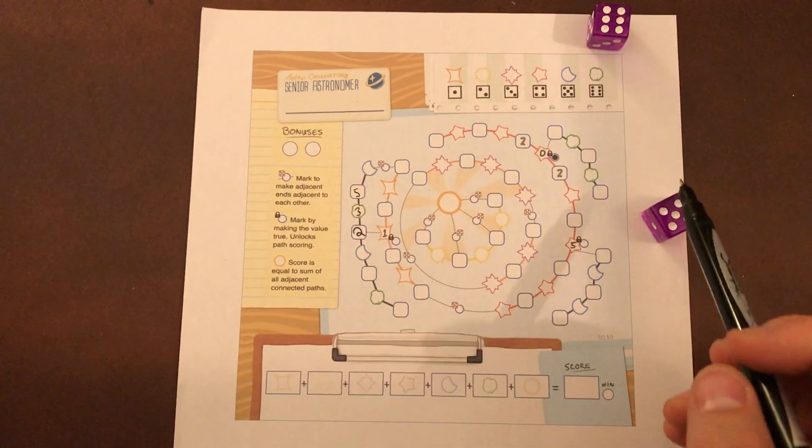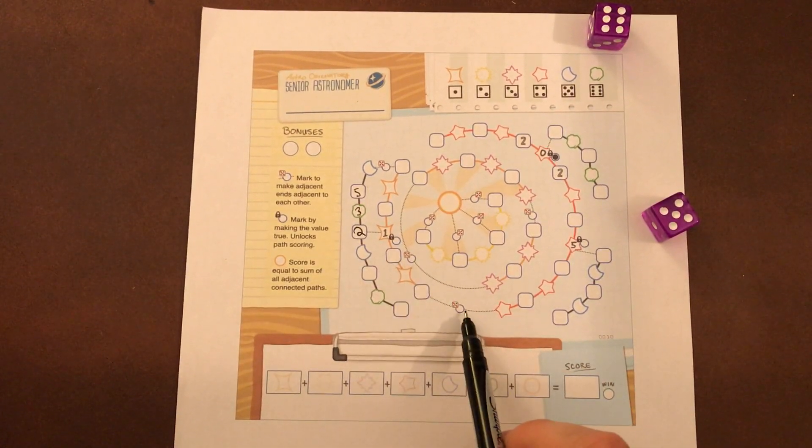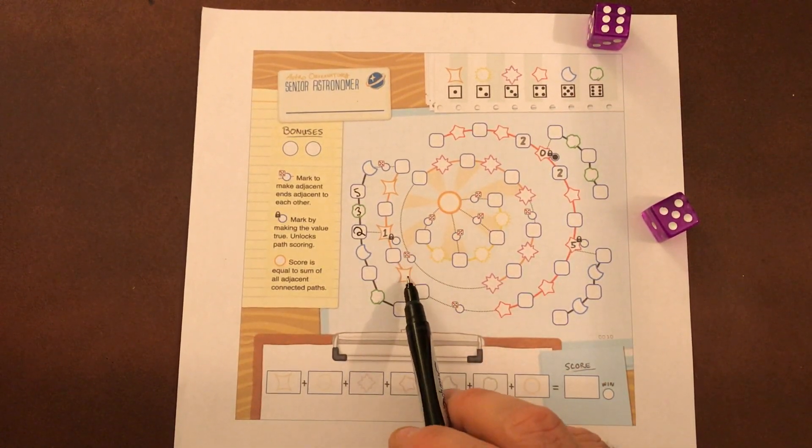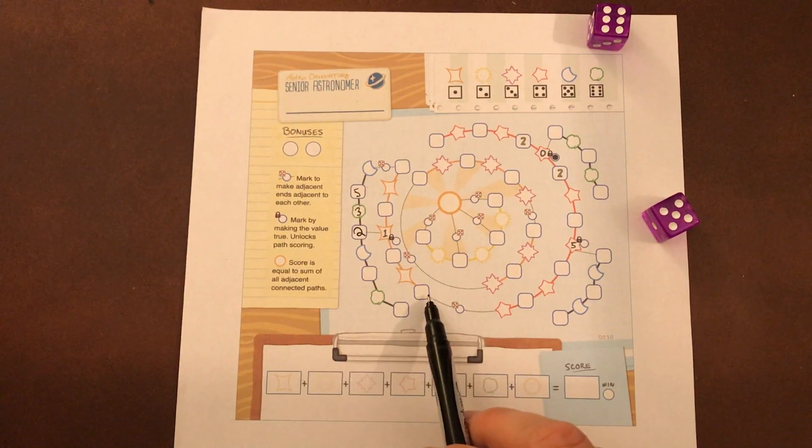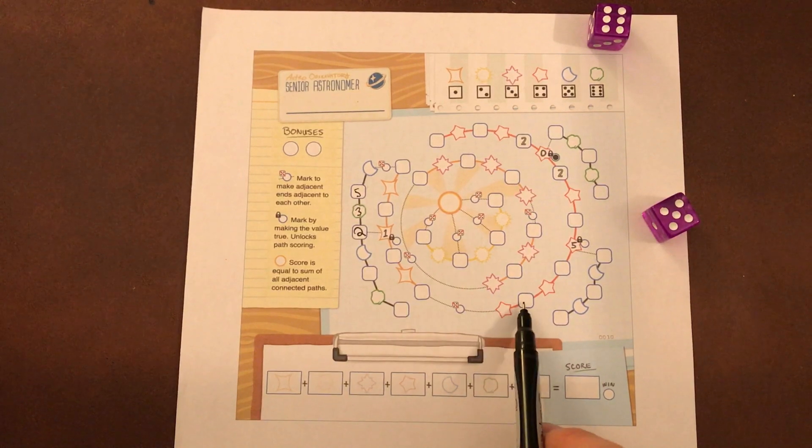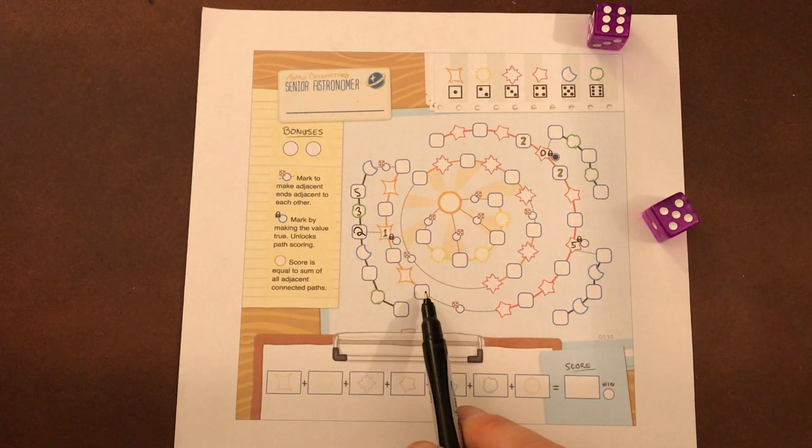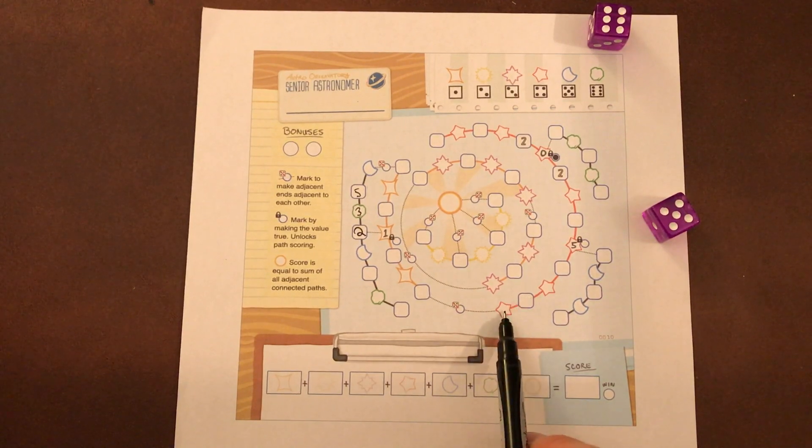If you choose not to use your dice you can check off one of these no dice ones and what that does is it builds this connection. So this star here you can't really gain until you've knocked that one off.